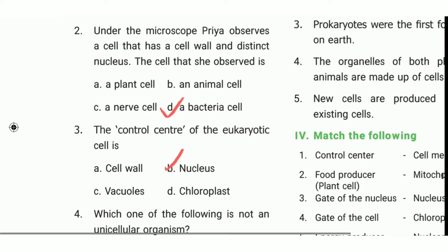Second one: under the microscope, Priya observed a cell that has a cell wall and a distinct nucleus. The cell that she observed is dash. The answer is D, a plant cell.